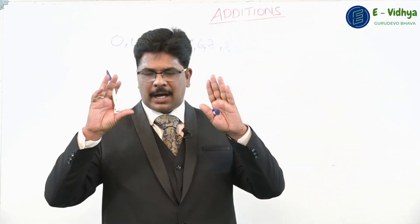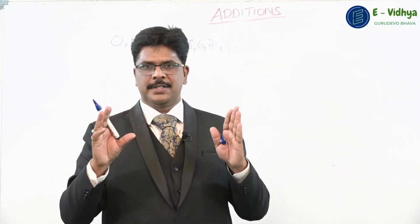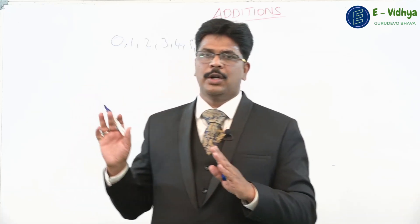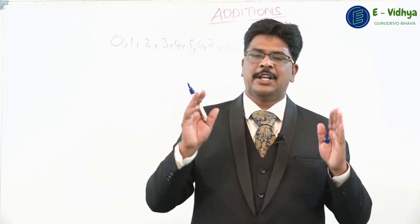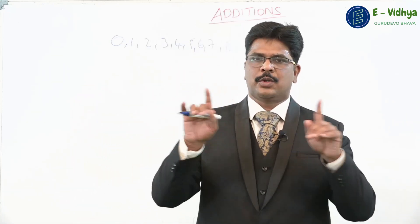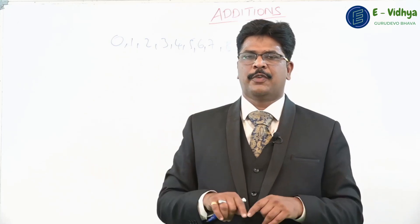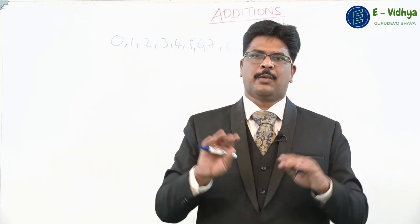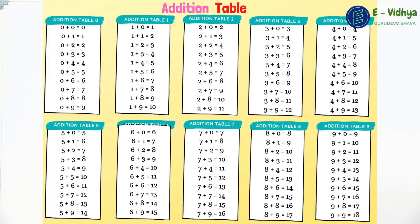They created all these — 10 permutations and 100 combinations — and with these 100 combinations, they conquered additions. This is called the addition table. Just verify this addition table that you can see on the screen now. This addition table is so easy that you don't even have to use your brain.